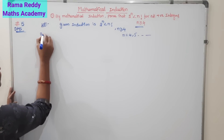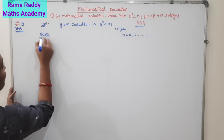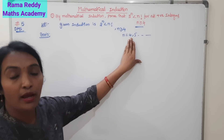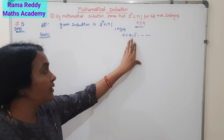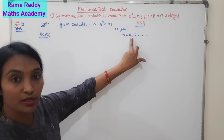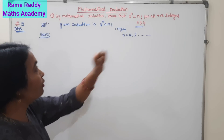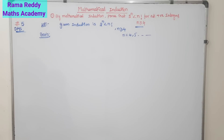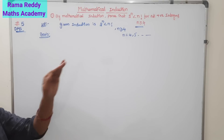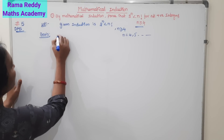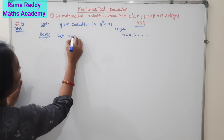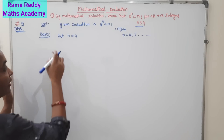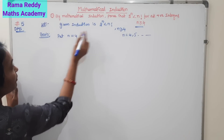Consider the basis step. The first value — our n naught — is 4. So if you consider the basis step, put n equal to 4. Putting n equal to 4, it is true and proved.